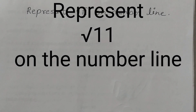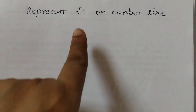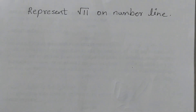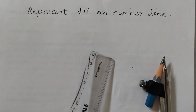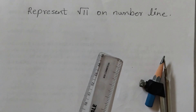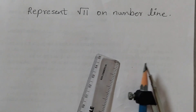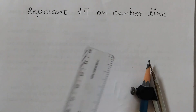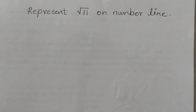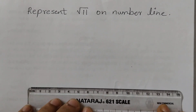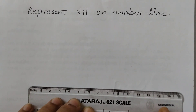Hello students, welcome back to Rosymath's class. Today we shall learn how to represent square root of 11 on a number line. For this you need a ruler and a compass. You can use a protractor also if you have seen my other videos — I have used a protractor there — but here I am going to use a compass to draw it. A ruler and a compass is sufficient.